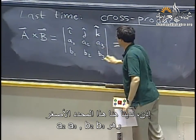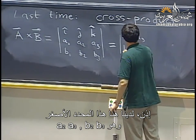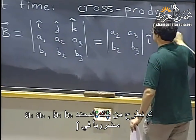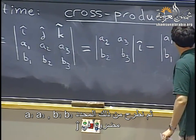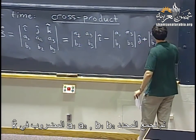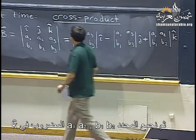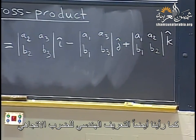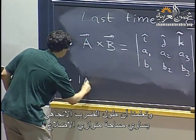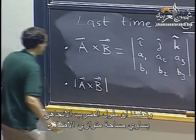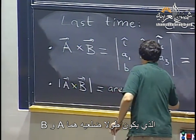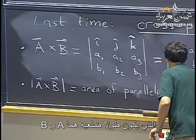So we have the smaller determinant: a2, a3, b2, b3 times i-hat, minus the determinant of a1, a3, b1, b3 times j-hat, plus the determinant of a1, a2, b1, b2 times k-hat. We also saw a more geometric definition: the length of the cross product equals the area of the parallelogram with sides a and b.